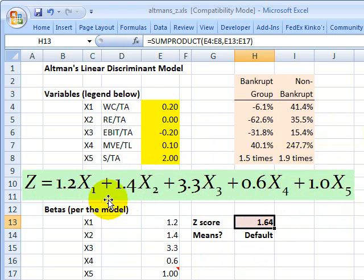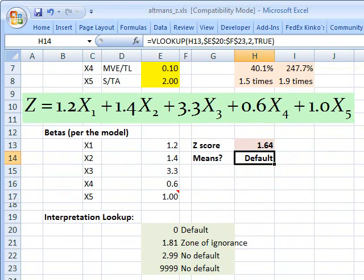And what we get here, the discriminant function produces for us a z-score of 1.64. That's based on these metrics. And notice I have the model returning a default. That's because if we go down here just a little bit, I'll see that there's an interpretation table here.